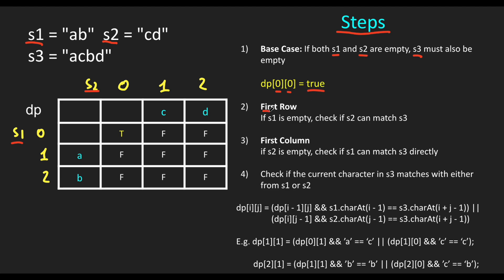Now let's populate the first row. If S1 is empty, we check each character of S2 to see whether it matches S3, and populate the first row. In the next step, for the first column, if S2 is empty, we check each character of S1 against S3.